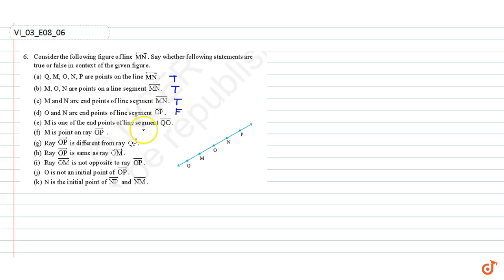M is one of the endpoints of the line segment QO. That is false.